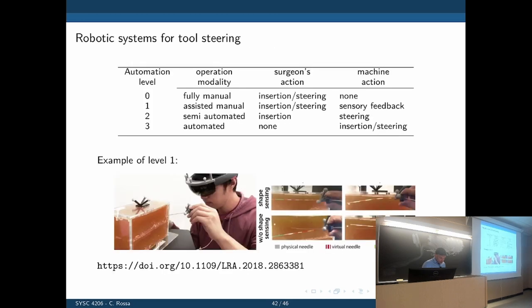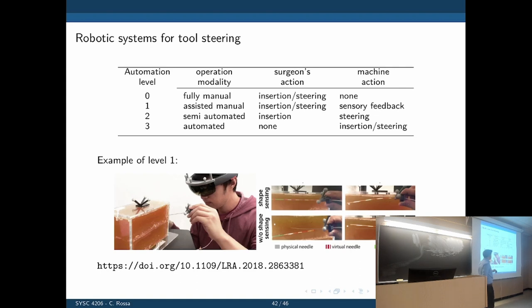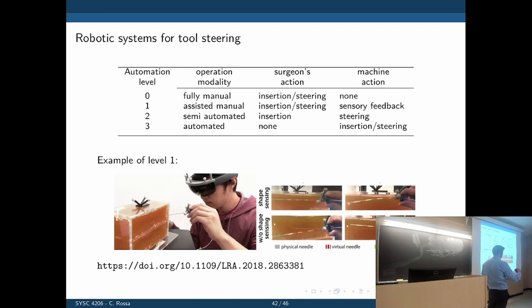There are several levels of autonomy we could grant to a robot. Level one is fully manual with no assistance. The second is assisted manual, with visual aid using the methods discussed to help the user guide the needle — for example, using virtual reality to track the position of the needle base, with overlaid green images calculated from the models showing where the needle is going to end up if no action is taken. That's augmented reality level one.